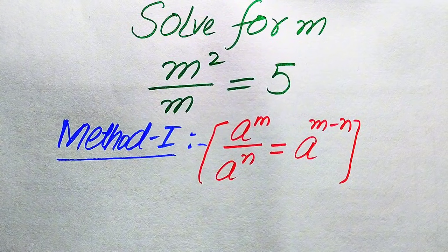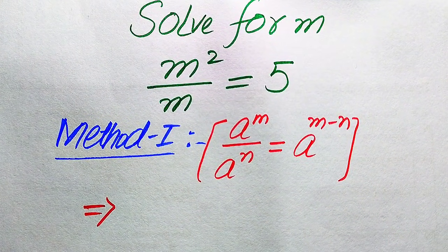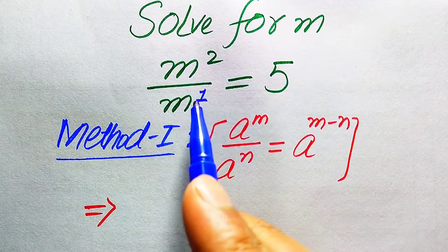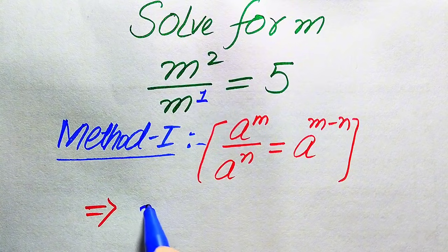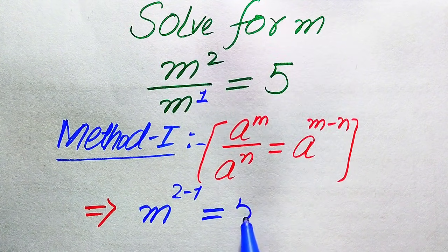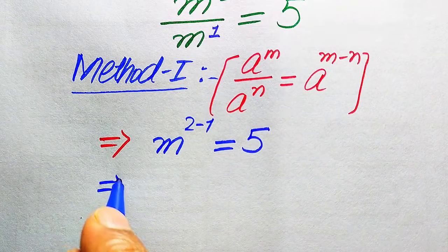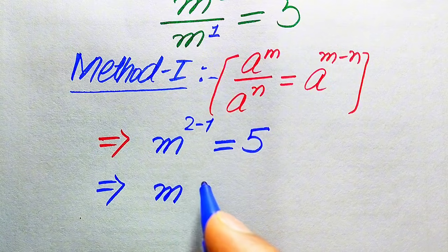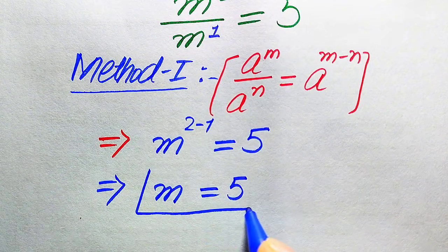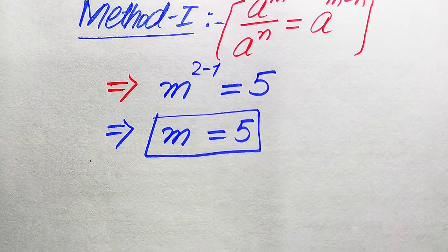Applying this rule, we rewrite the left hand side. The exponent of m is 1, so we get m to the power of 2 minus 1, which simplifies to m to the power of 1 equals 5. Therefore m equals 5.